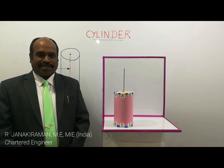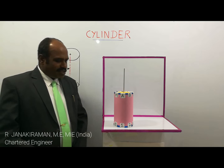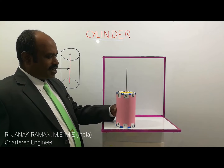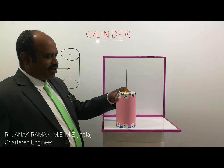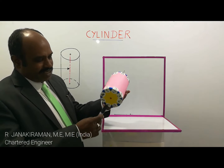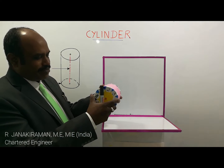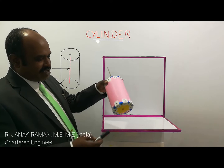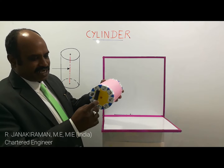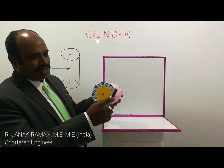The topic is about cylinders. Here I have shown one cylinder, and the cylinder has the following parts. This part of the cylinder is called the base, which rests on the table. So this part is called the base. The shape of the base is circular.